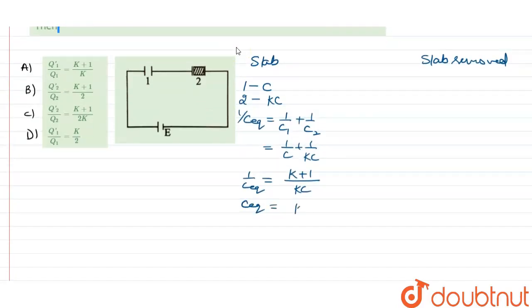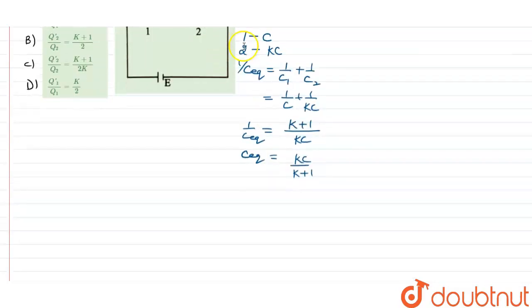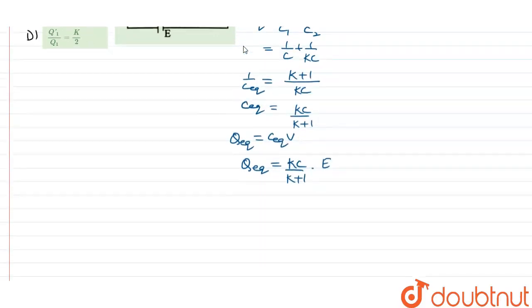Q_eq equals C_eq times V, and that is equal to kC/(k+1) times E. As we know that the capacitors are in series, the charge in each capacitor is the same. So Q_eq equals Q1 equals Q2.